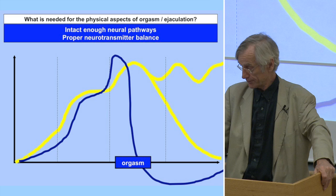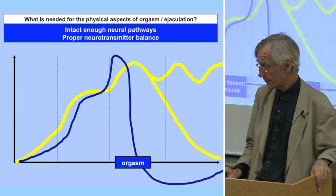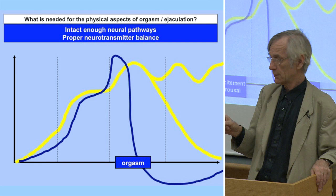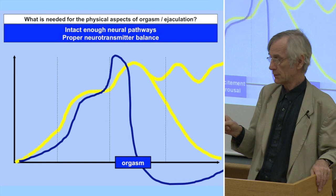The third phase — orgasm or ejaculation — requires especially good neural pathways and functioning neurotransmitters; these are specifically very important for orgasm. What you need in all phases is the same — as I sometimes explain when giving a workshop, it is the same signal...